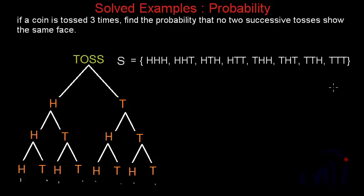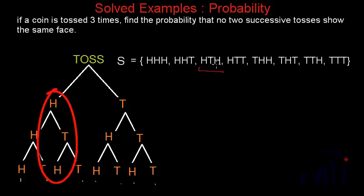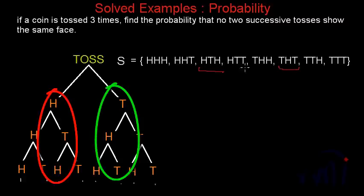We have to find the probability that no two successive tosses show the same face. If we look at this set, we have only two favorable outcomes. One is head, tail, head. Another one is tail, head, tail. Otherwise, in all the outcomes there are at least two consecutive tosses which show the same face.